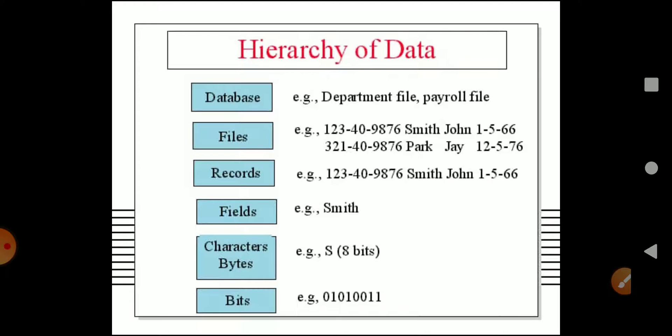Looking at the slide: a bit comprises 0 and 1 and is the smallest unit of memory. A combination of bits is known as a byte. One important point: one byte is equal to 8 bits.